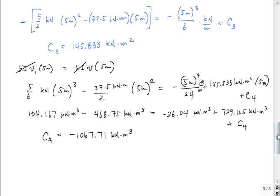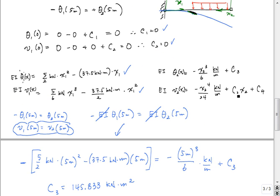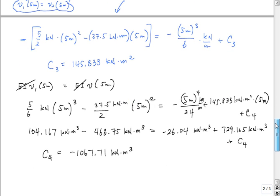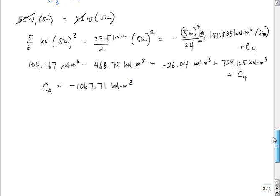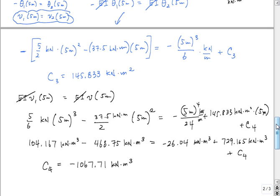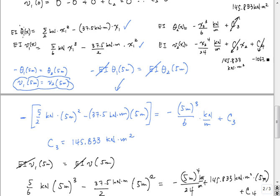So now I've got all my constants and finally what I can do is go back and plug and chug into my constants over here. And I've already got equations for this. And so here for this one right here, I would just put in C3 is, what was that? That C3 was 145.833 kilonewton meter squared. And same thing here, this would be that 145.833 kilonewton meter squared. And then C4 would be negative 1067.71 kilonewton meters cubed.